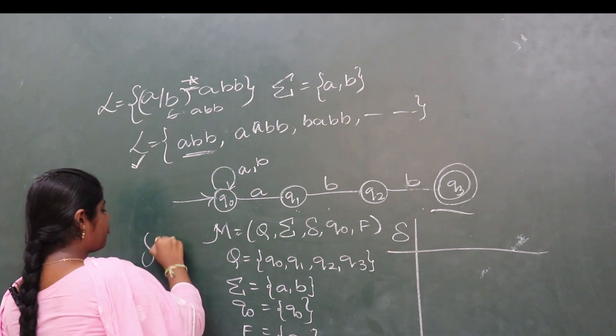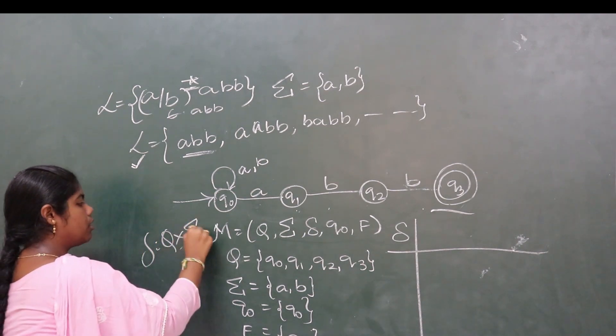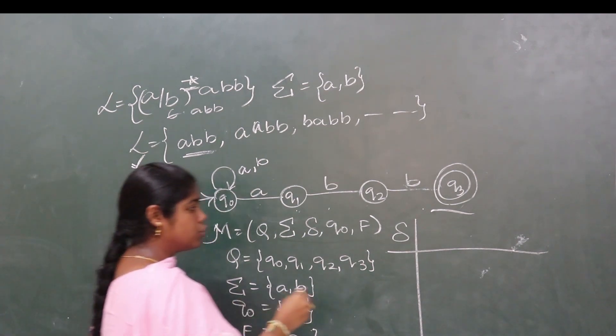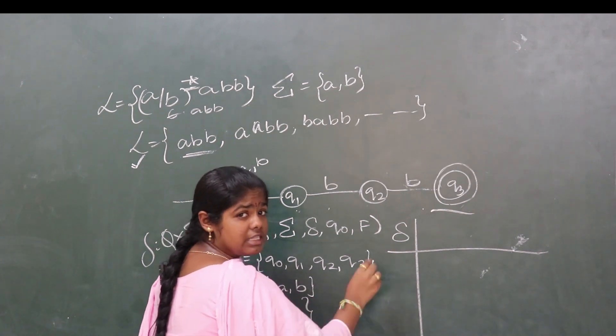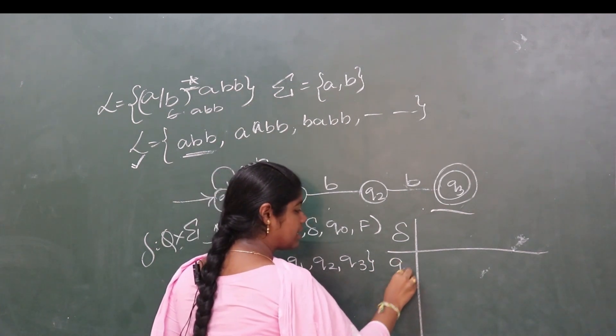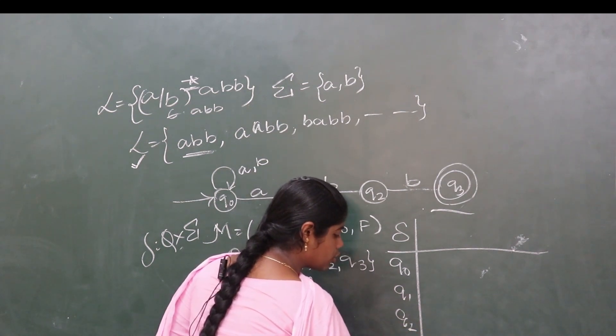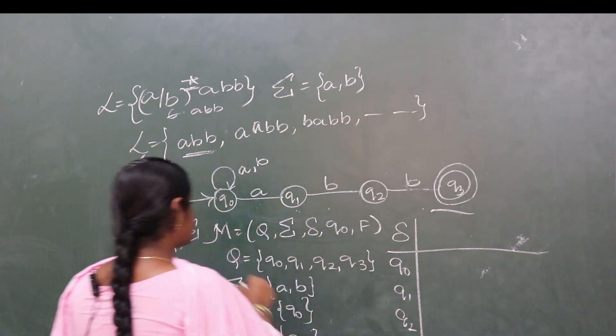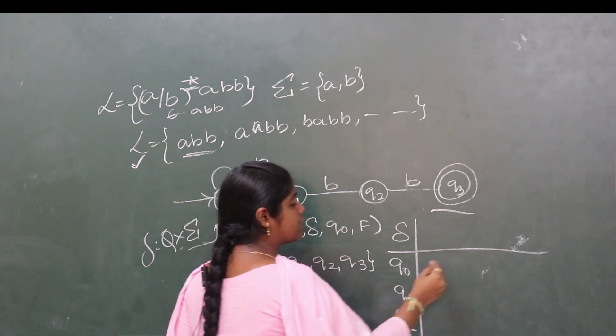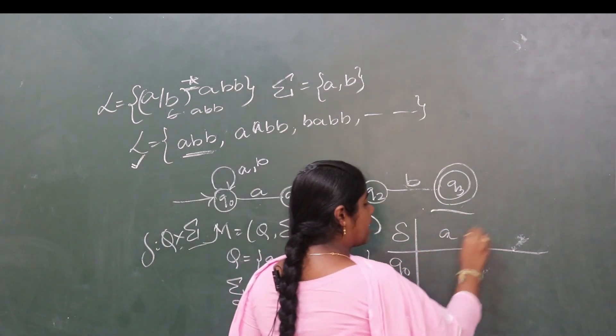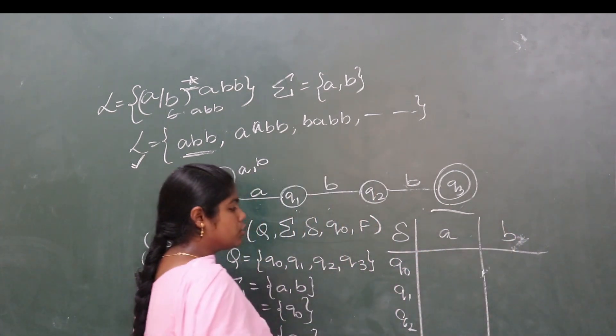The transition function formula is Q × sigma. Take the set of states Q0, Q1, Q2, Q3 on the vertical axis. Sigma, which is {a, b}, is taken on the horizontal axis.